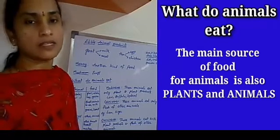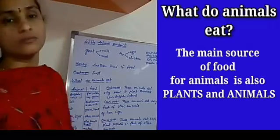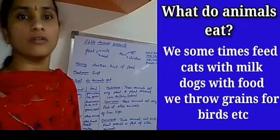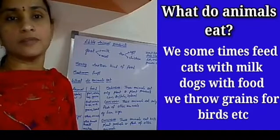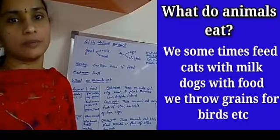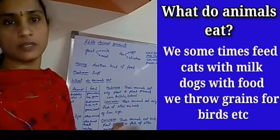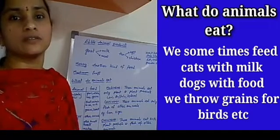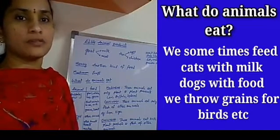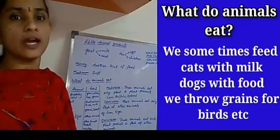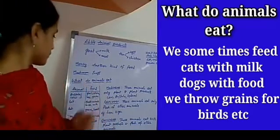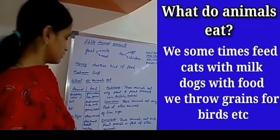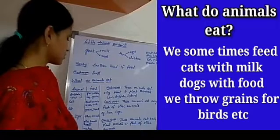We know what a dog eats, what a cat eats — we see them around our house daily. We sometimes feed cats with milk and dogs with food. We throw grains at birds for them to eat. Buffaloes and cows eat grass, oil cakes, hay, grains, etc.